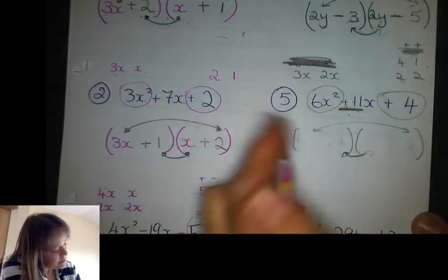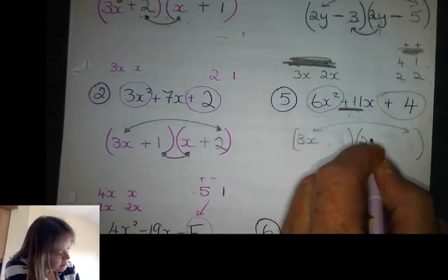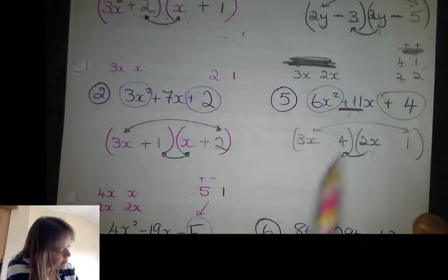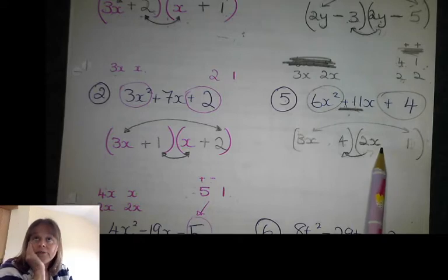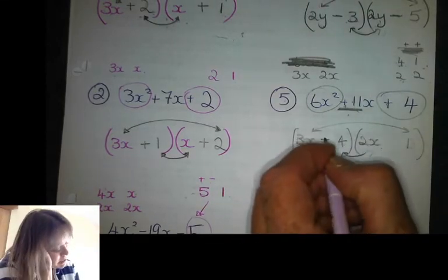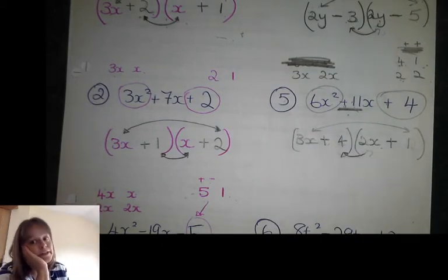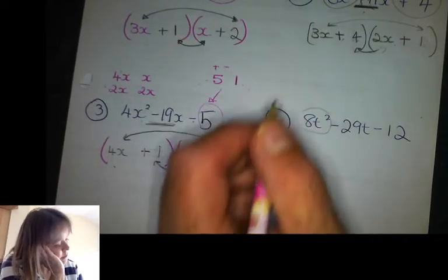So that rules out 6x and x entirely. Let me try 3x and 2x with four and one: this makes 3x, this makes 8x — three plus eight is eleven! And since everything is plus signs, that's good news. I found the option that works, and if it hadn't worked I'd just keep going until I found the one that worked.